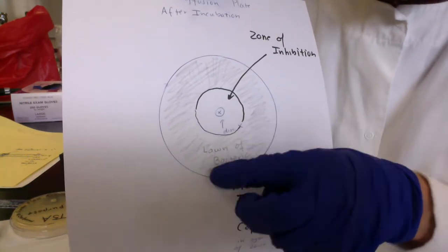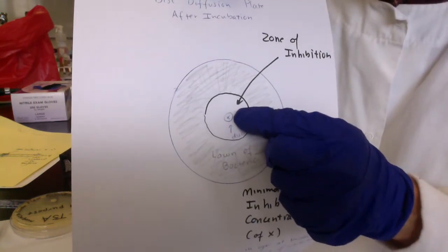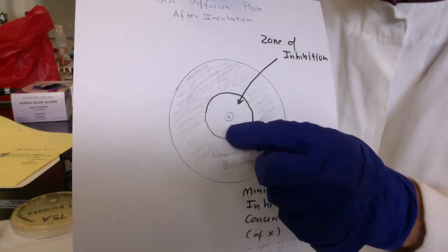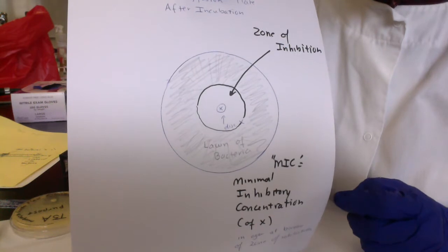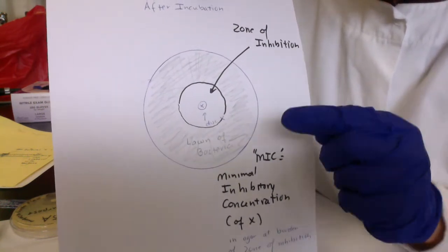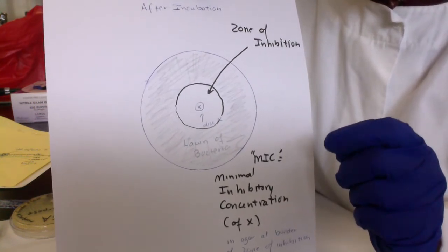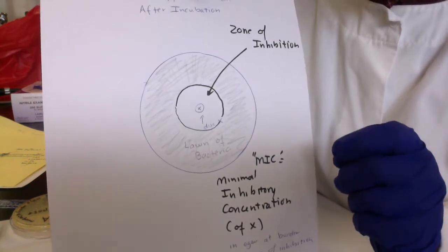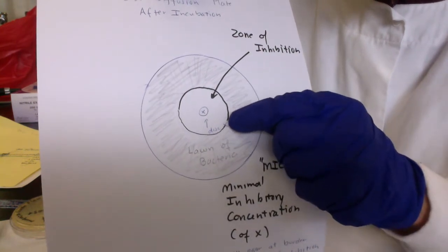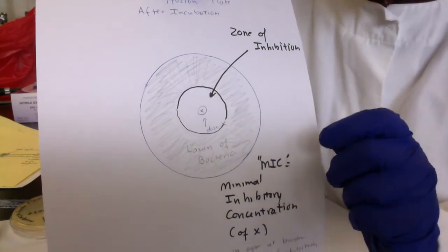Here's my plate. The gray pencil shading represents the lawn of bacteria, and this little circle with an X represents my disc soaked in chemical X. That clear zone around the disc where no bacteria are growing is called the zone of inhibition. We can determine where in the agar the MIC — the minimal inhibitory concentration of chemical X — is. The MIC is the smallest concentration of chemical X that will inhibit or kill the bacteria, and it will be found in the agar right at the border of the zone of inhibition.